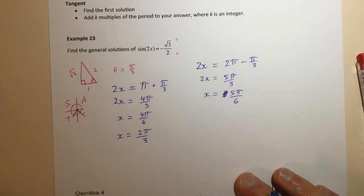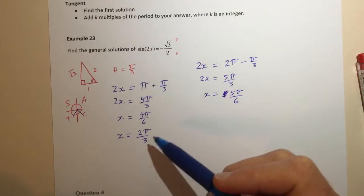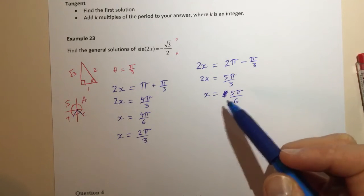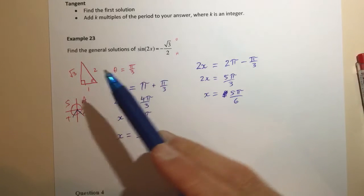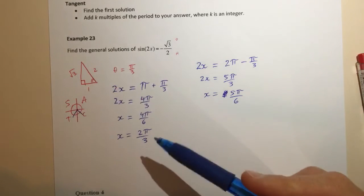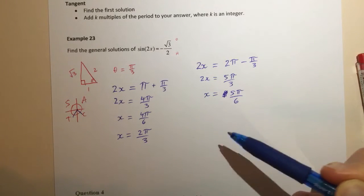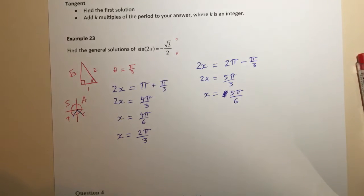All right now normally what we would do is we'd look at our domain and say okay well we're going to add the period or subtract the period to these answers and find any more solutions that are still inside the domain. But in this case our domain is really all real numbers because we're finding general solutions, so we could sit here forever and add the domain, sorry add the period, and add the period again and again and again. Obviously we're going to run out of paper and time.